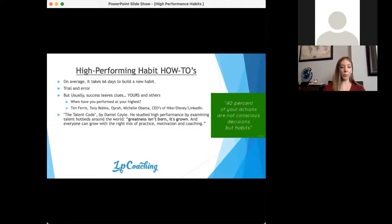You can also look to people like Tim Ferriss, Tony Robbins, Oprah, Michelle Obama, CEOs. They all have some sort of habit that they speak about like meditation, visualization. Tony Robbins has this incredible morning routine of getting up and meditating and working out and then doing a cold plunge. Success and high performance habits leave clues. A great book that I recommend is The Talent Code by Daniel Coyle. He studied high performance by examining talent hotbeds all over the world.